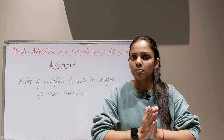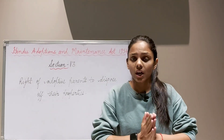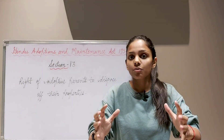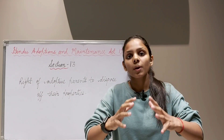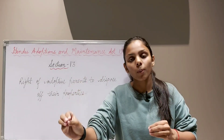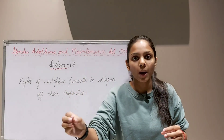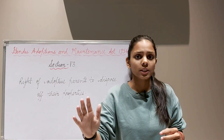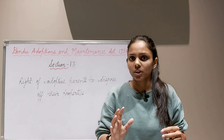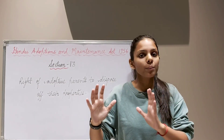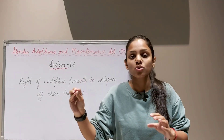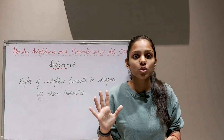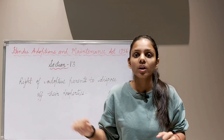This means that when adoptive parents are alive, they can transfer property to another living person — for example, by way of sale or gift. This gives us clarification that the property is no longer the adopted child's or the natural born children's, because the property has been alienated and disposed of by the owner, i.e., the adoptive parents.